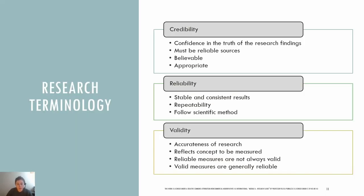Let's review some research terms. Credibility is defined as the quality or power of inspiring belief. Credible sources must be reliable sources that provide information one can believe to be true. Reliability refers to whether or not you get the same answer by using an instrument to measure something more than once. Research reliability is the degree to which a research method produces stable and consistent results.